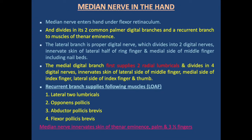The median nerve enters the hand under the flexor retinaculum and divides into its common palmar digital branches and a recurrent branch to the thenar muscles. The lateral branch is the proper digital nerve, which divides into two digital nerves innervating the skin of the lateral half of the ring finger and medial half of the middle finger including nail beds. The medial digital branch first supplies the two radial lumbricals and divides into four digital nerves innervating the lateral side of the middle finger, medial and lateral sides of the index finger, and the thumb.